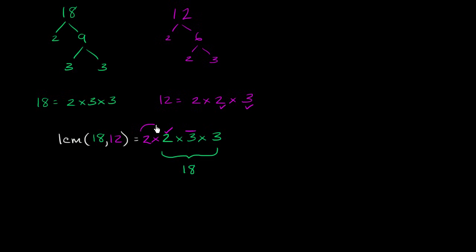So notice, now this number right over here has a 2 times 2 times 3 in it, or it has a 12 in it. And it has a 2 times 3 times 3, or an 18 in it. So this right over here is the least common multiple of 18 and 12. If we multiply it out, so 2 times 2 is 4, 4 times 3 is 12, 12 times 3 is equal to 36.